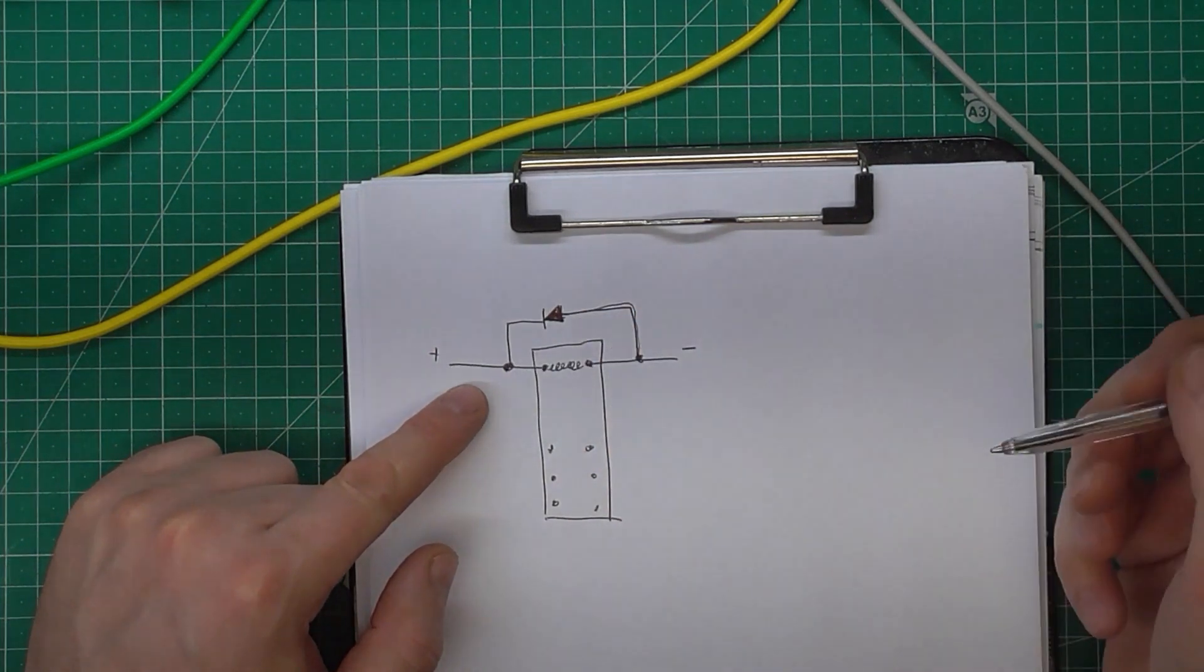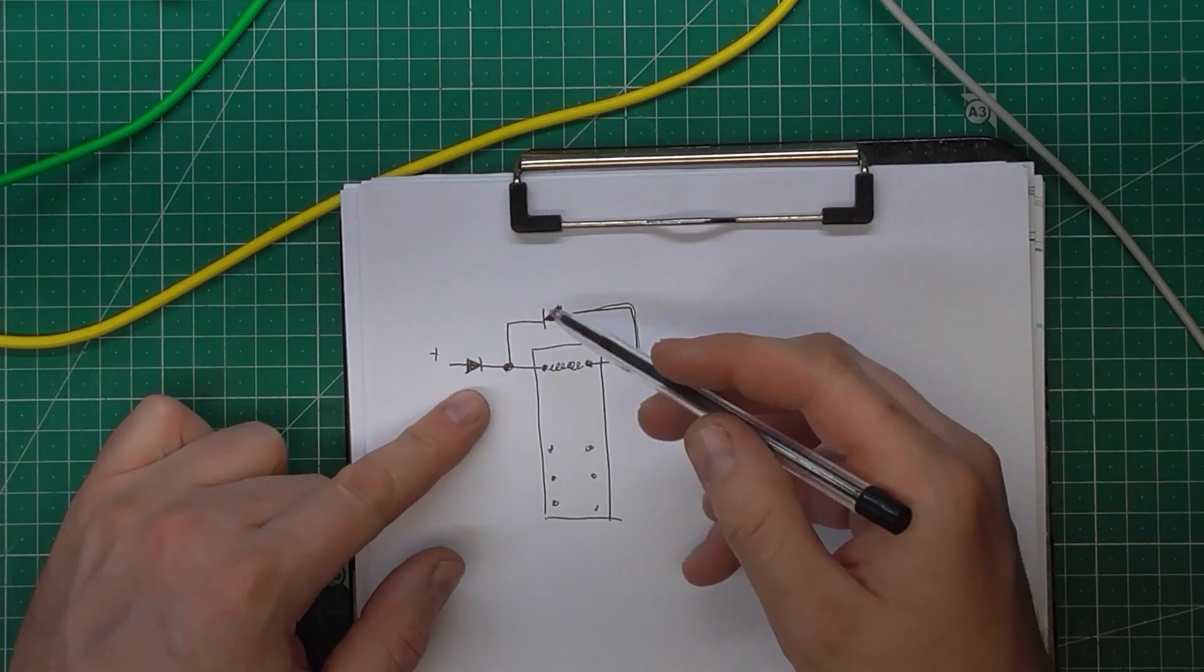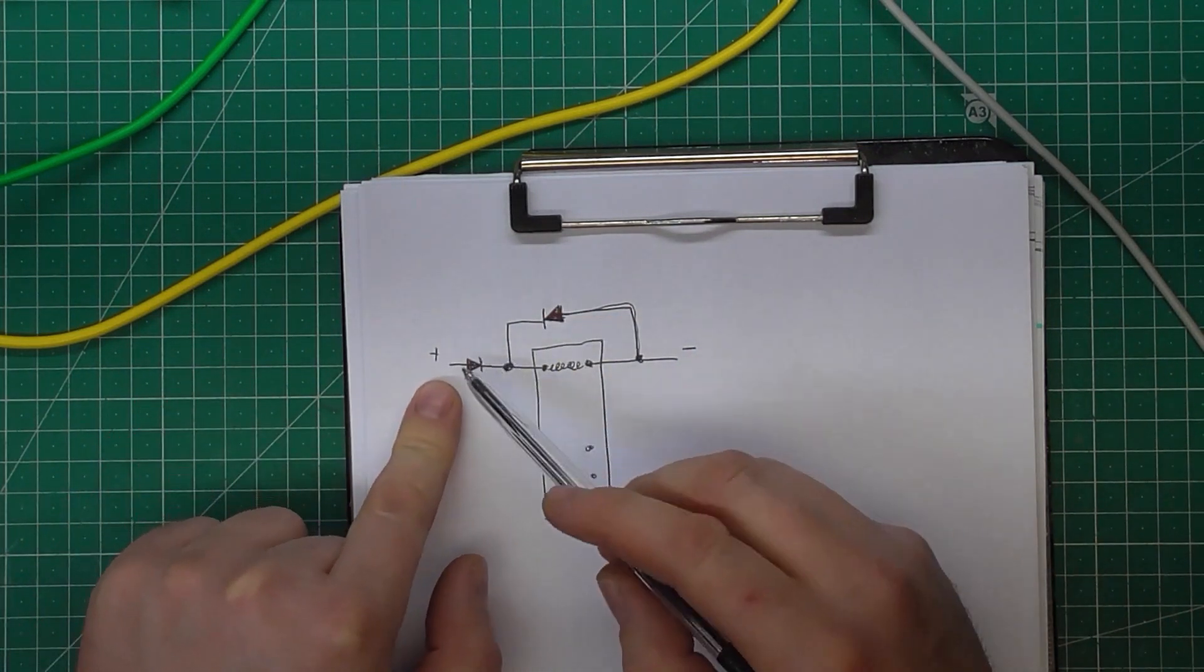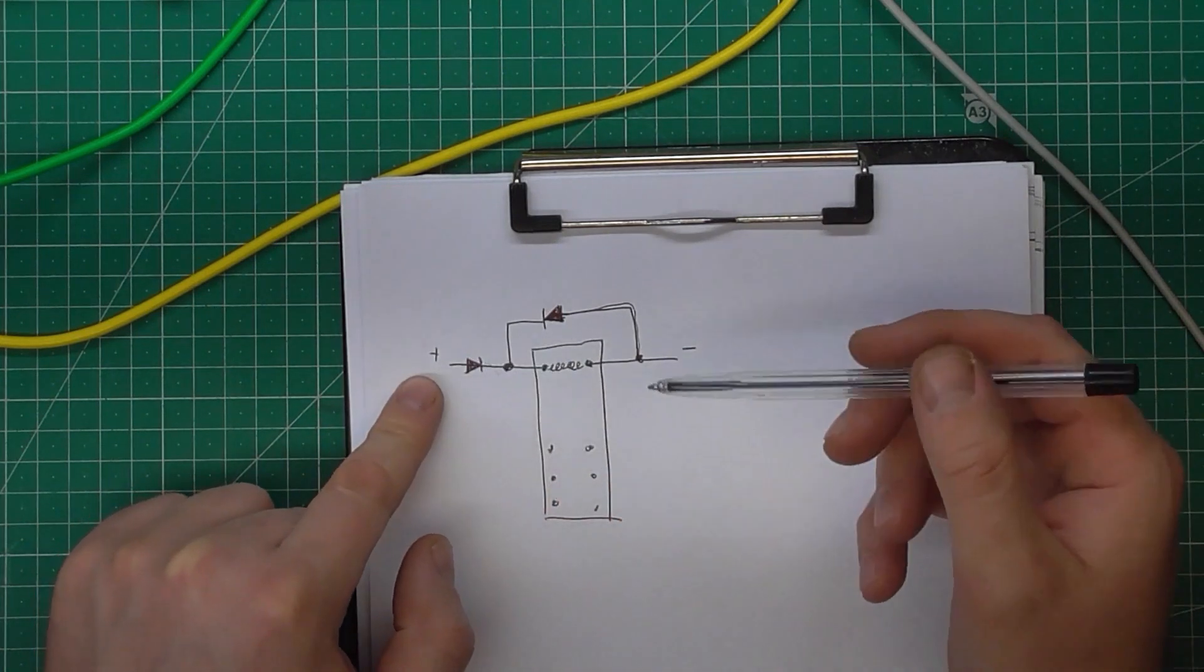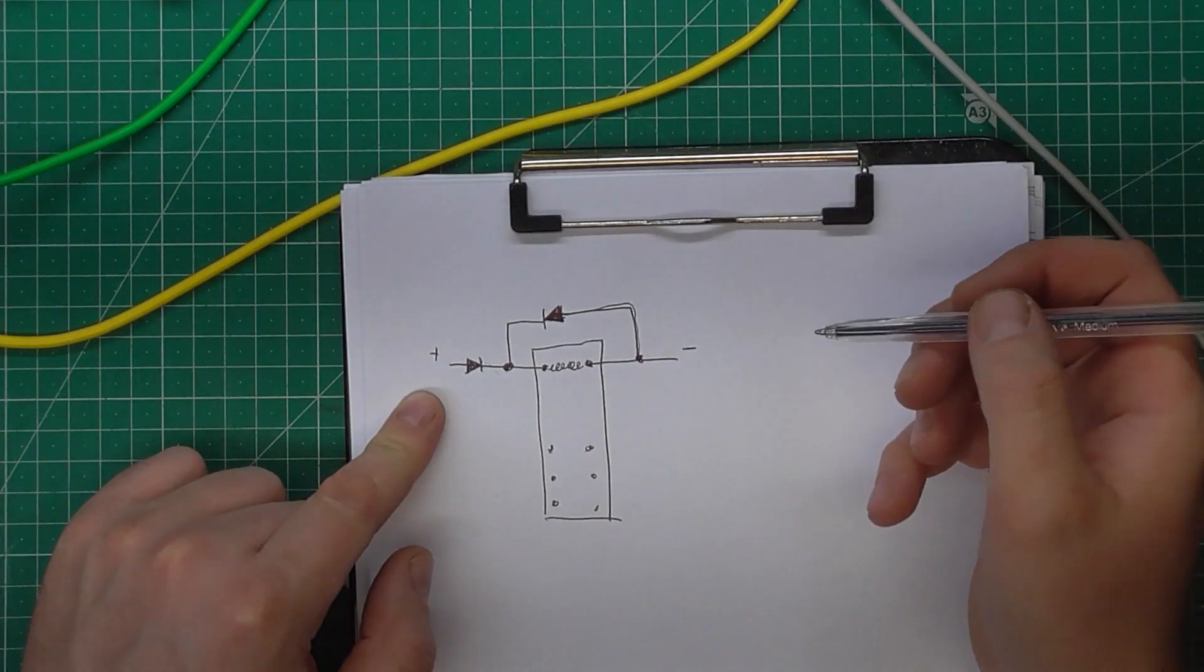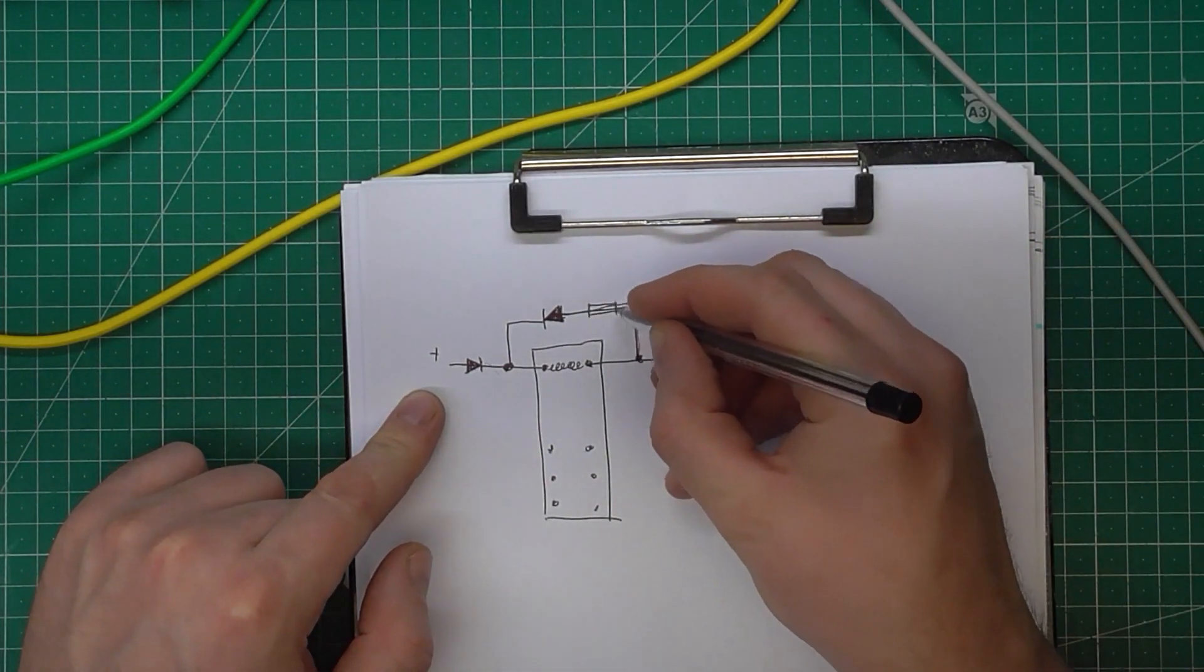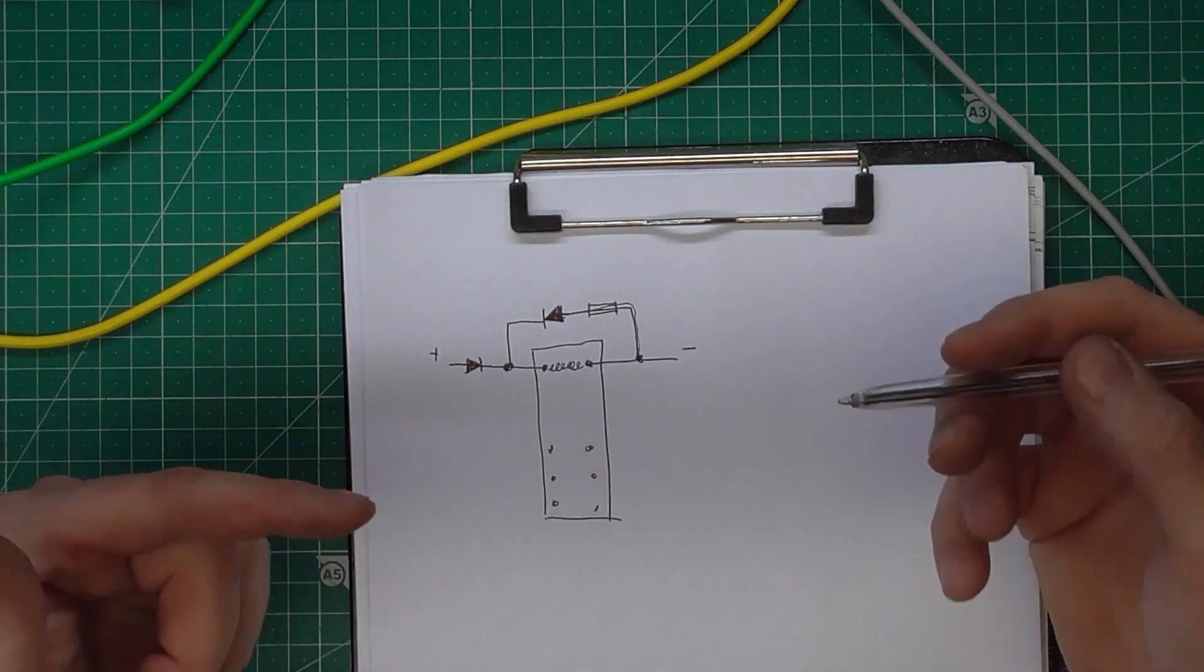In bigger inductive devices like transformers and switching power supplies, there is a capacitor on the way. All these three elements—capacitor, resistor, and diode—form the snubber network, which we'll see in many applications.